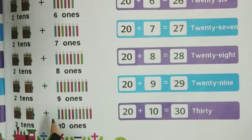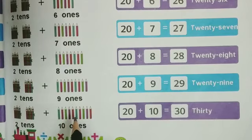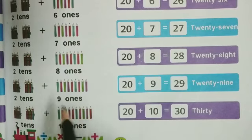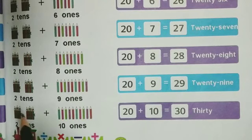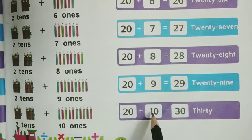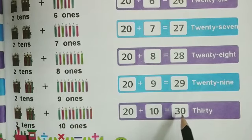Now the last one: one, two, three, four, five, six, seven, eight, nine, ten — 10 pencils or 10 objects — plus 2 tens. Two tens means a group of 20 pencils. We will add them: 20 and 10. It is 30.